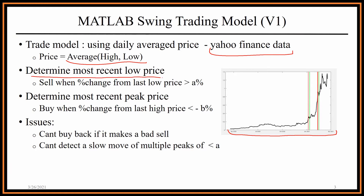The logic behind this first model was to simply determine the most recent low price. Based on the current day it would search back for the most recent low, and then it would sell when the percent change from that last lowest price was greater than a certain set percentage, or what I call 'a'. Basically, if you look over here, we see that there's a big rise right here and after that big rise we sell because it had risen a certain percentage. Then in order to make profit by swing trading you need to buy back in at a lower price, so I had to look for a change from the most recent high price and if it was greater than a certain negative percentage — if it had dropped — then buy back in.